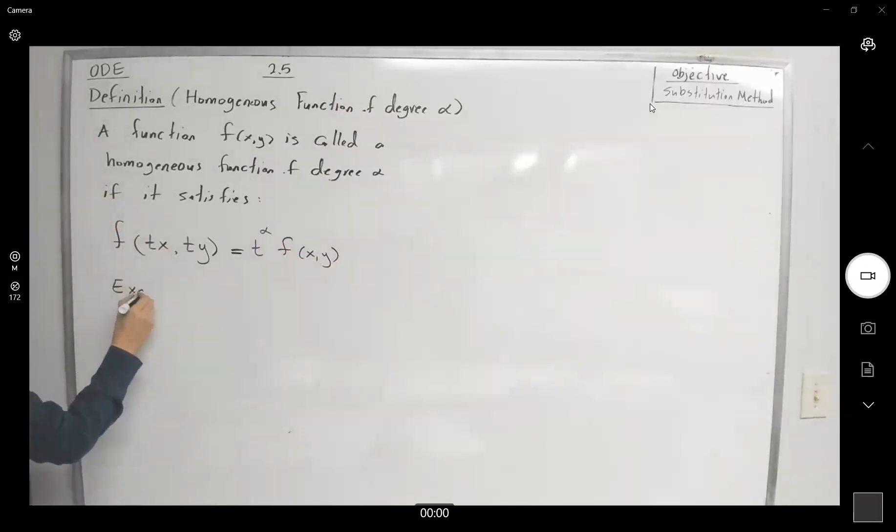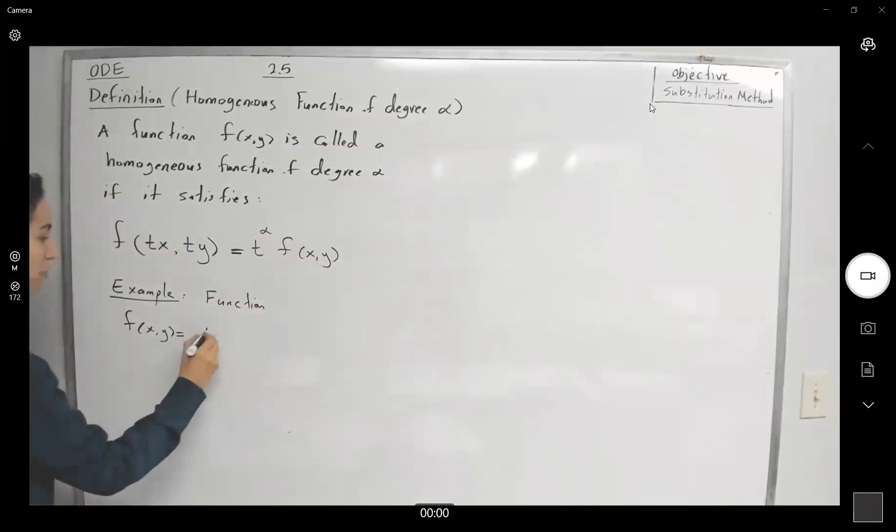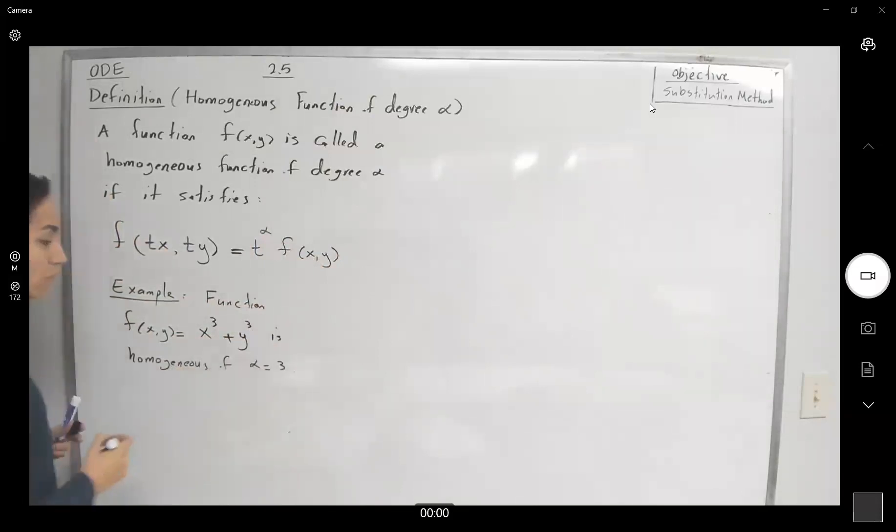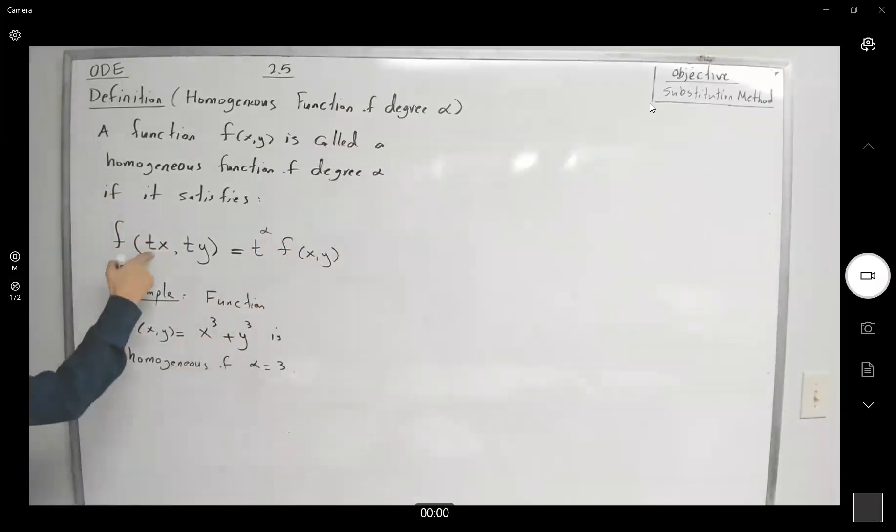For example, function f(x,y) equals to x cubed plus y cubed is homogeneous of degree 3. Why is that? Let us do the substitution.